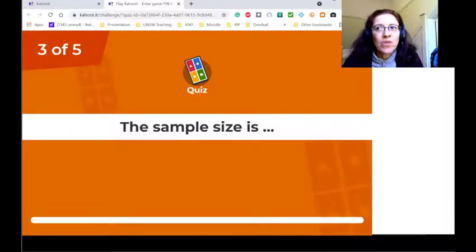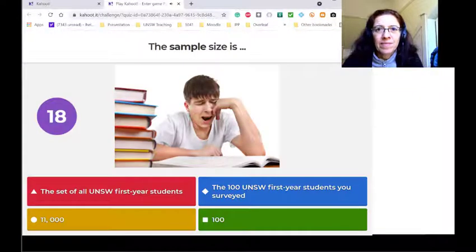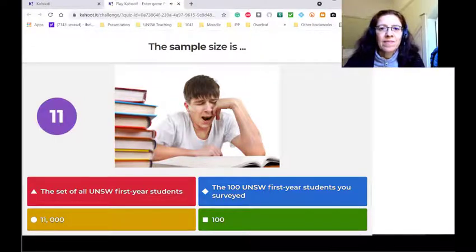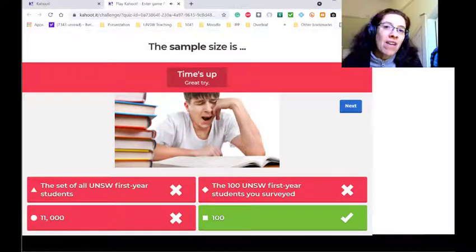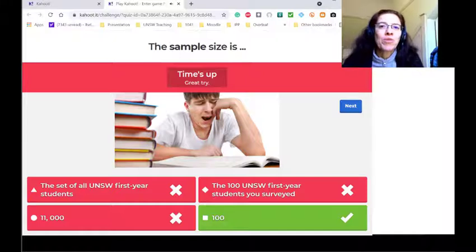It sounds like the previous question, but it's different. I changed my mind. I'm not answering at all, in fact. So the sample size is, as you expect, the size of your sample. So we had a sample with 100 people, so the sample size is 100. The sample size or the population size will always be numbers.